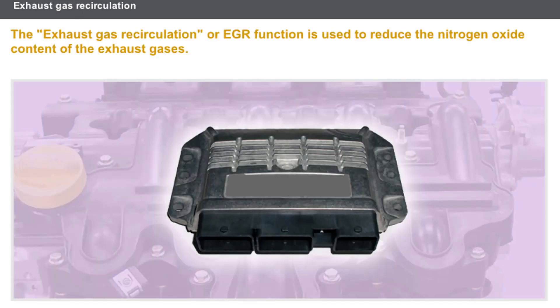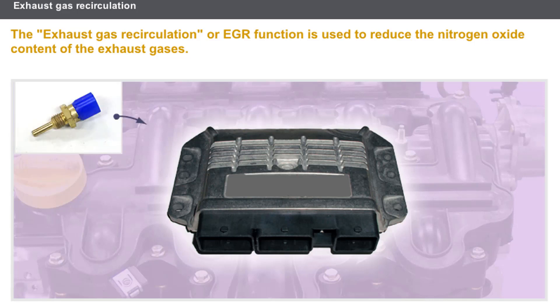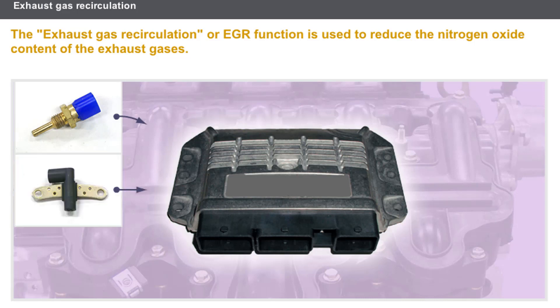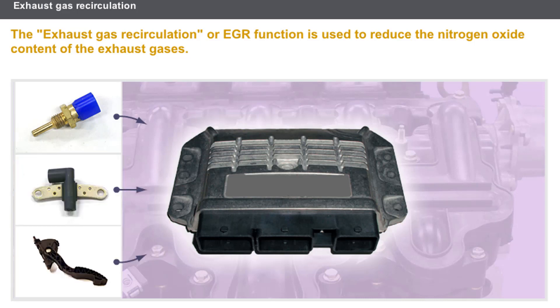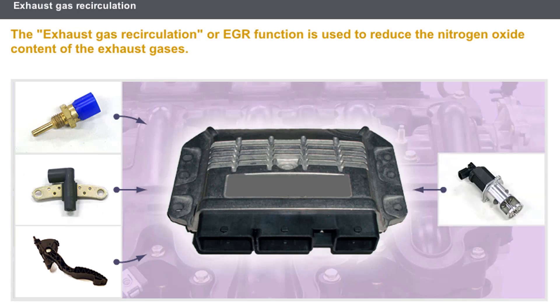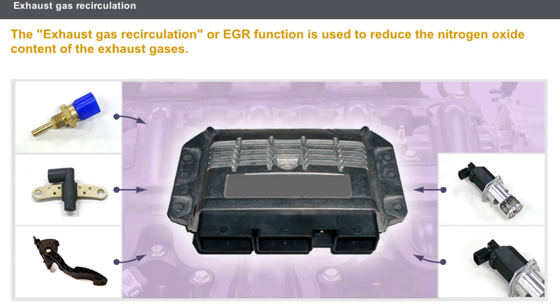The exhaust gas recirculation (EGR) function is used to reduce the nitrogen oxide content of the exhaust gases. This function uses the following components: the coolant temperature sensor, the engine flywheel sensor, the accelerator pedal position sensor, the exhaust gas recirculation valve, and the EGR valve position sensor.